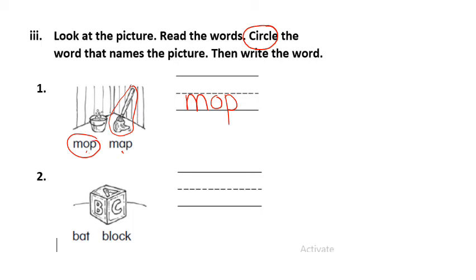Number two. I have a picture and I have the words bat, block. This picture is not a bat, it is a block, and then I write block on the line.